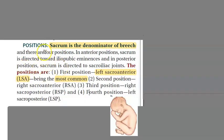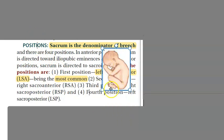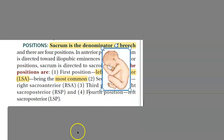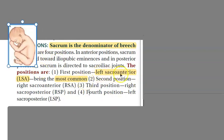In a breech presentation, the denominator is the sacrum of the baby. The most common position is left sacro-anterior (LSA). Second is right sacro-anterior, and then you have sacro-posterior. In the exam, you will explain the most common position, which is left sacro-anterior.